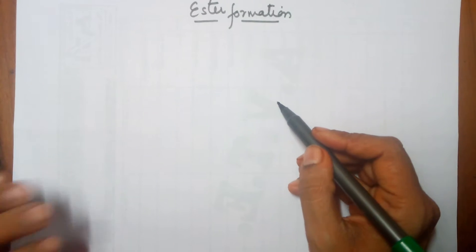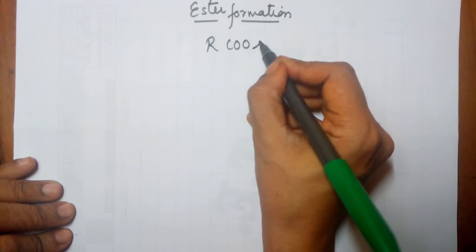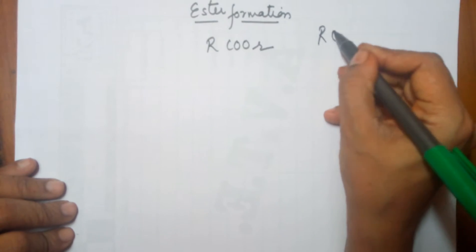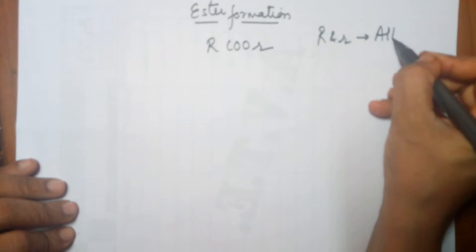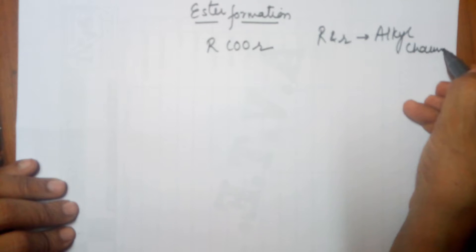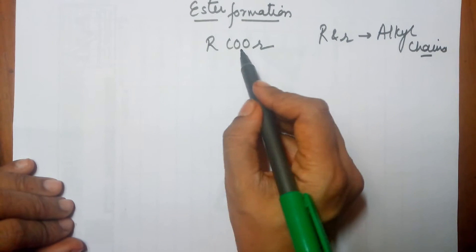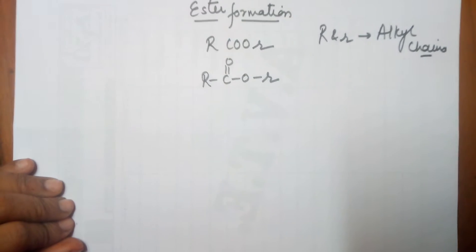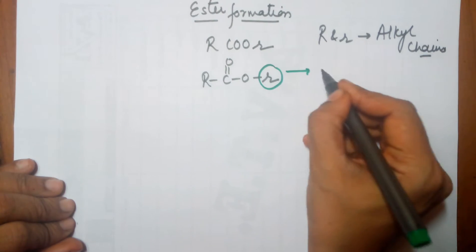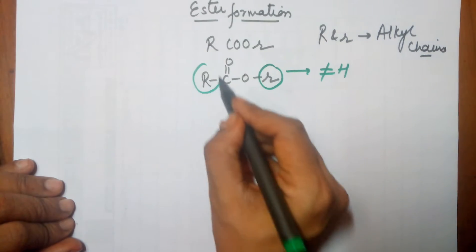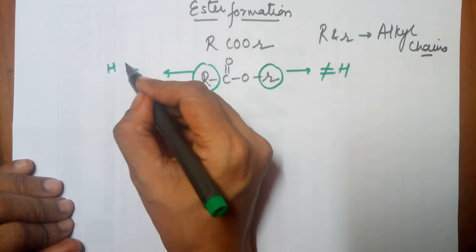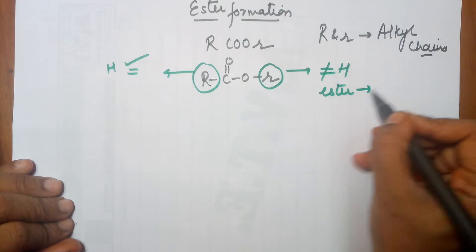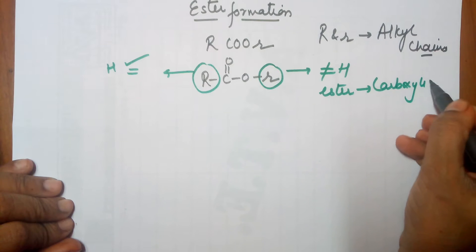An ester looks like this. I have deliberately taken the two R's as different — capital and small — but they are both nothing but alkyl chains, meaning they are carbon chains. When we talk about an ester, the structural formula is like this. Mind you, just a recall: this R cannot be an H, while this R can be an H. If this R transforms into an H, your compound changes from ester to carboxylic acid.